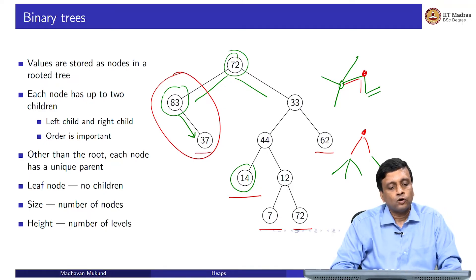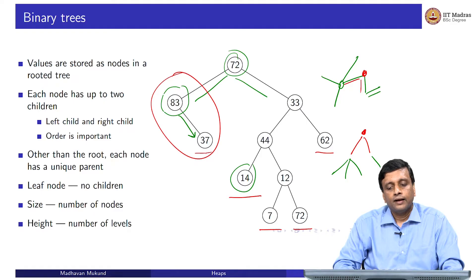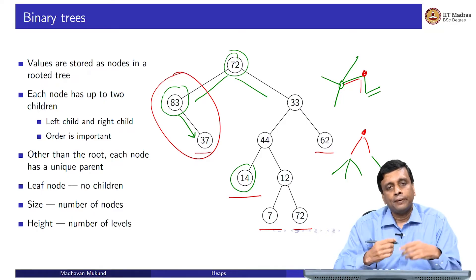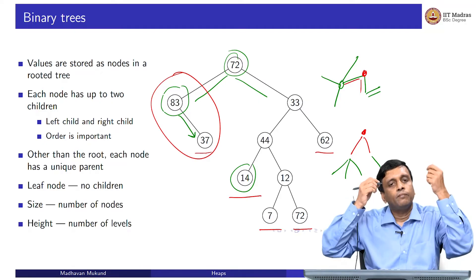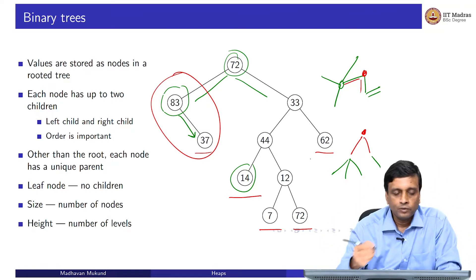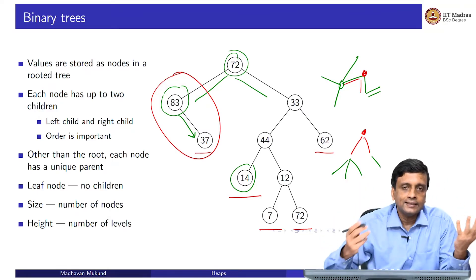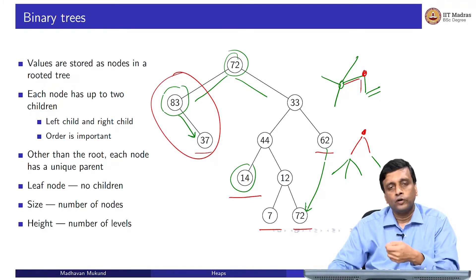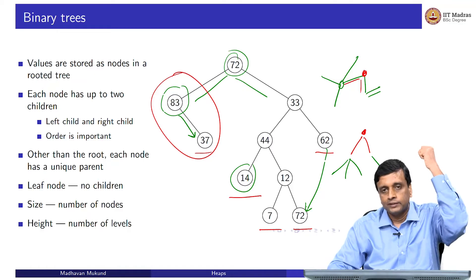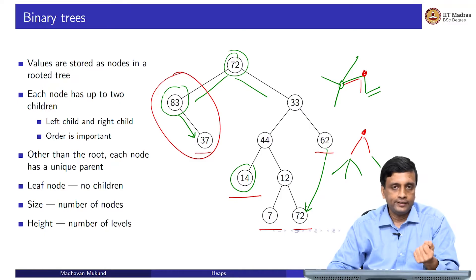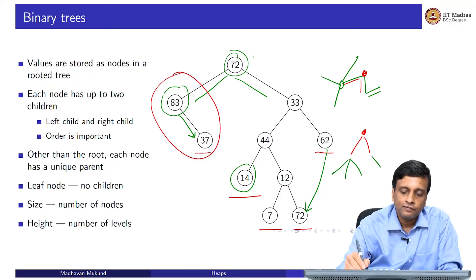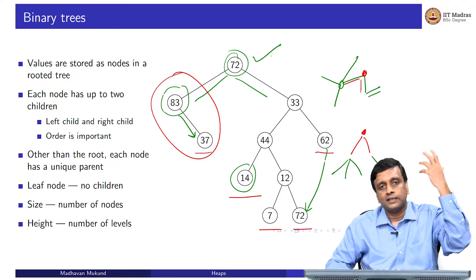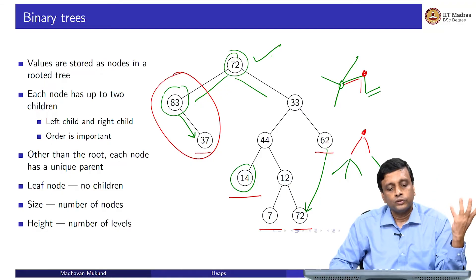Nodes with no children are called leaves. Going upward, every node hangs from a unique node above it — its parent — because the underlying structure is a tree with no alternative paths. Every node has a unique parent; the only node without a parent is the root.